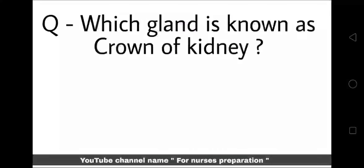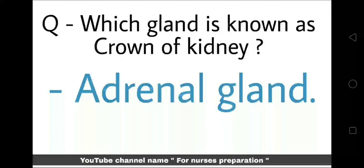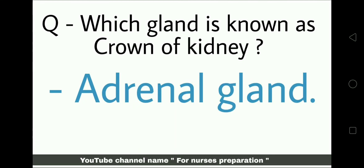Which gland is known as the crown of the kidney? Adrenal glands are known as the crown of the kidney. Adrenal glands are also known as suprarenal glands.